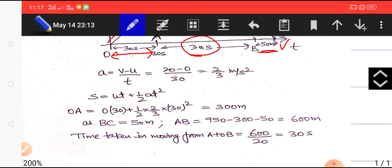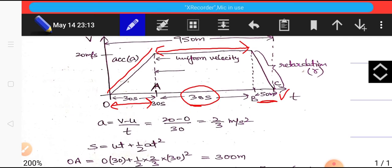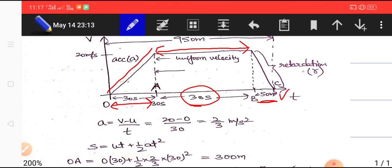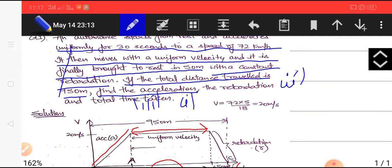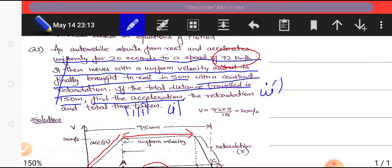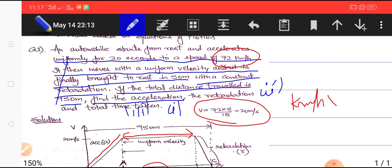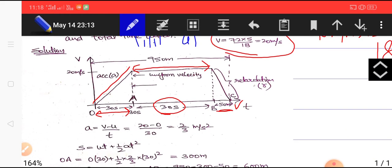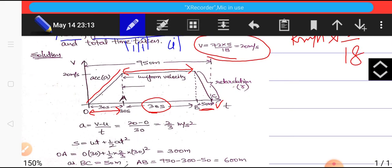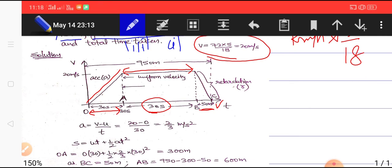To start with, let us calculate the acceleration first. As we can see, the velocity is changing from 0 to 20. Please don't forget to convert your 72 kilometer per hour into meter per second using the formula - when velocity is given in kilometer per hour you multiply it by 5/18. We know the basic formula a = (v - u)/t. Applying that formula we can easily get acceleration 2/3 meter per second square.